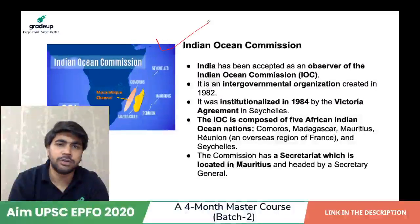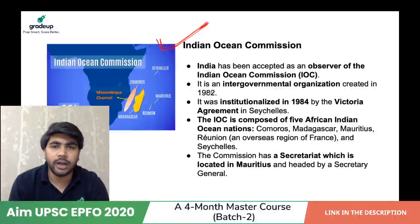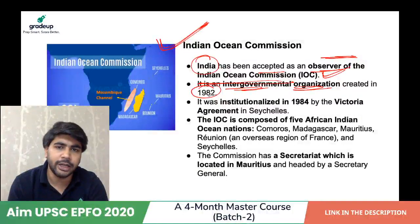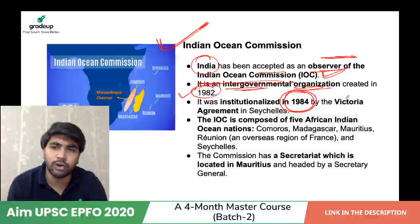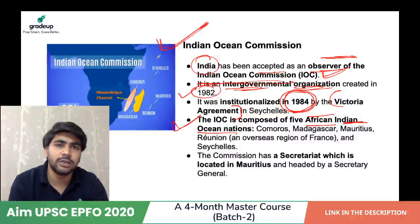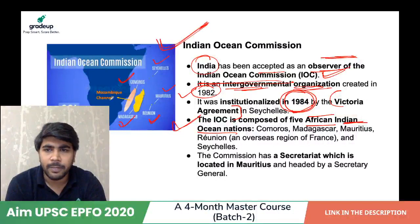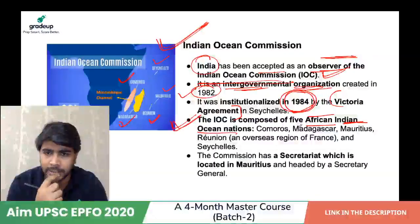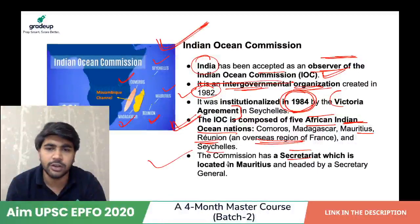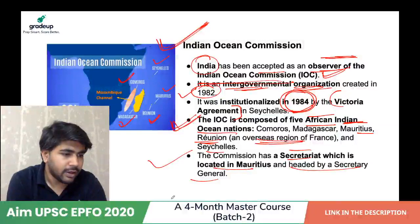The third term is Indian Ocean Commission (IOC). India has been accepted as an observer of the IOC, which is an inter-governmental organization created in 1982 and institutionalized in 1984 by the Victoria Agreement in the Seychelles Islands. The IOC is composed of 5 African Indian Ocean nations: Comoros, Madagascar, Mauritius, Reunion — an overseas region of France — and Seychelles. The commission's secretariat is located in Mauritius and is headed by a Secretary General.